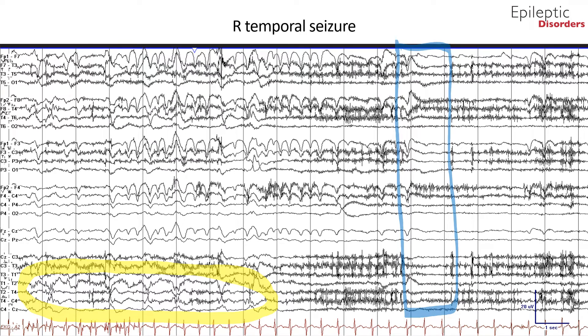In the last page of this seizure shown in bipolar montage, there are well-formed rhythmic one hertz discharges over the right temporal region, as shown in the temporal chains — specifically in the coronal rings highlighted in yellow. The rapid eye blinking noted in the FP1 and FP2 channels is artifact resulting from nursing care applying an oxygen mask as the patient was experiencing mild desaturation. At the end of the seizure, there is post-ictal electrographic suppression annotated by the blue highlighted square box.